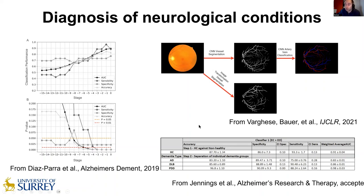We have also looked at EEG — electroencephalography — in order to look at activity of the brain. With very high performance, we could separate different dementia groups: Alzheimer's disease, dementia with Lewy bodies, and Parkinson's disease dementia. We could differentiate those with very high specificity as well as sensitivity, and also of course distinguish healthy from non-healthy subjects.